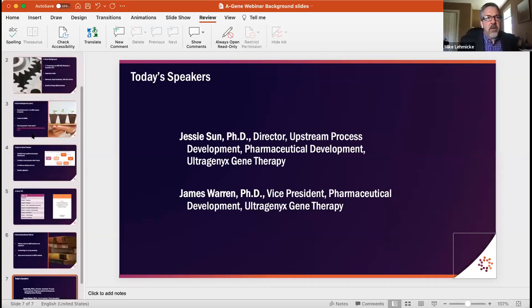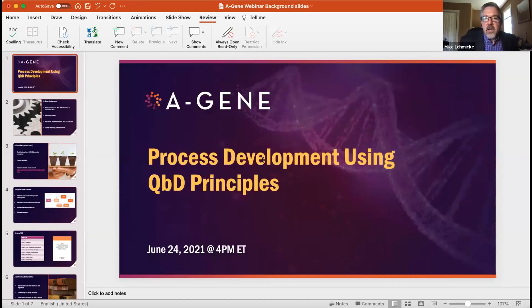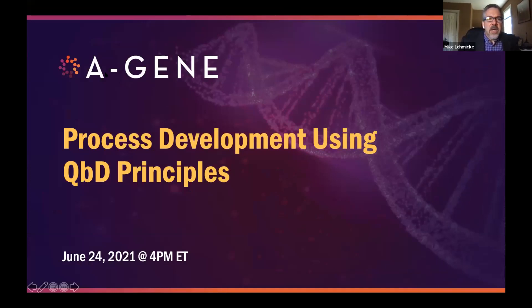Thank you for joining us in this webinar, the first in a series on the Agene Project, which I am proud to announce that ARM is releasing today on our website. Today we have two fantastic speakers with us to talk about one of the chapters of Agene. My name is Michael Lemecki. I'm the Director of Science and Industry Affairs at ARM. Today's topic in particular will be on process development using quality by design principles.